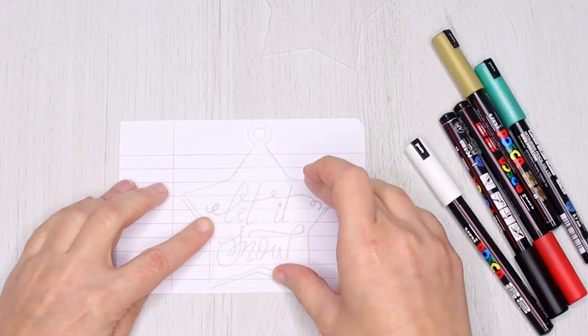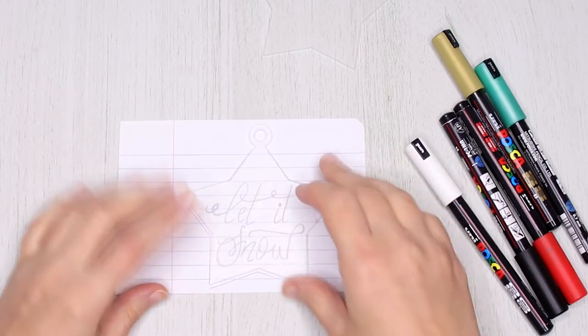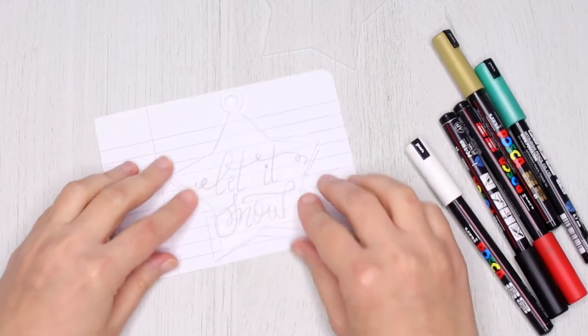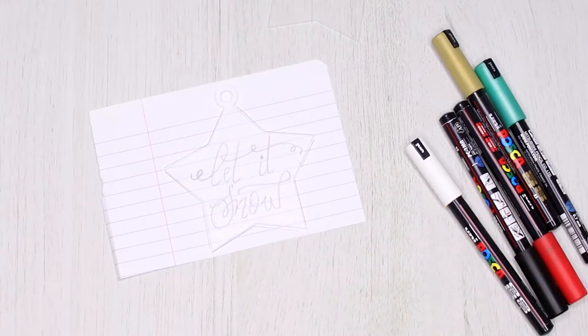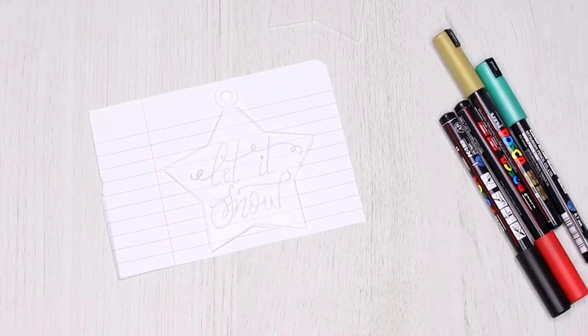I've already prepared my design. I traced the star shape on a piece of paper and lettered the text "Let It Snow." The acrylic baubles are great as they are see-through and you can easily copy your design on them.